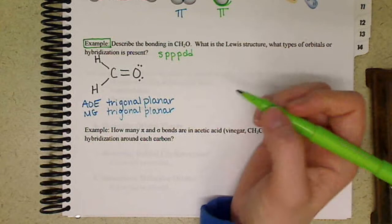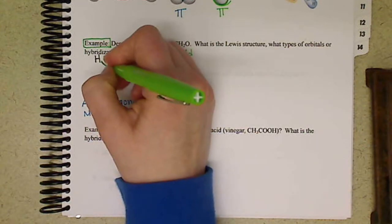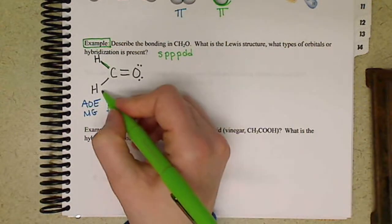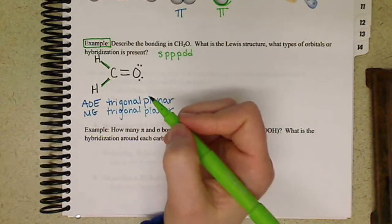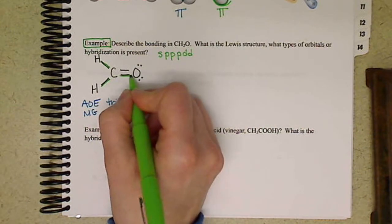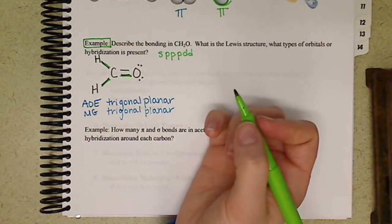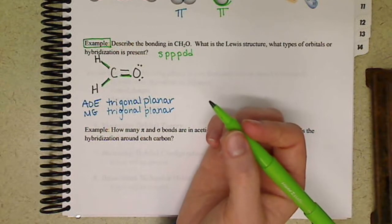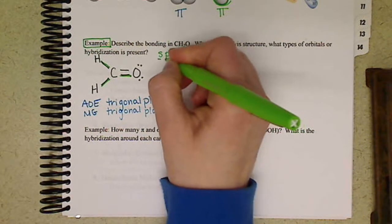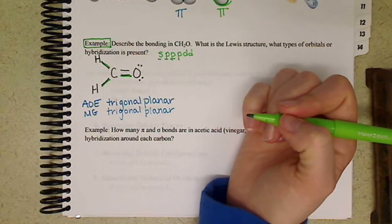and we essentially look at how many sigma bonds we have. So we have this one bond there, two bonds, three bonds. We have three sigma bonds, three first bonds formed, so we would need three orbitals.